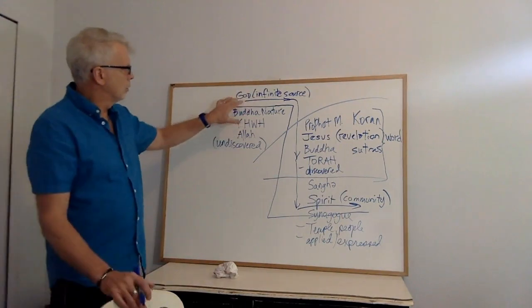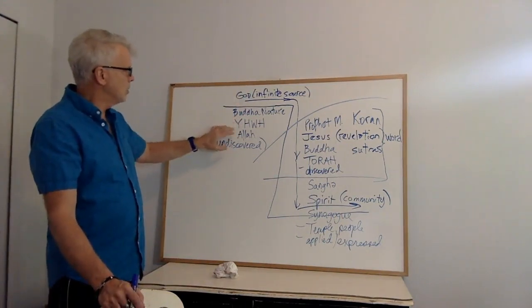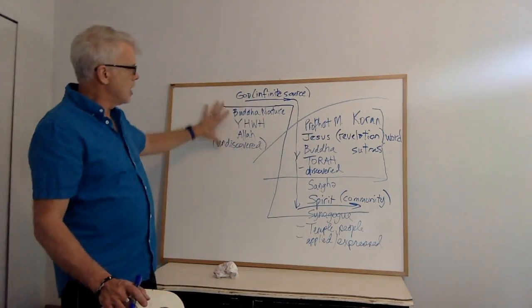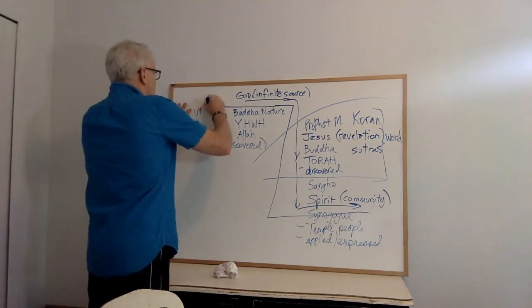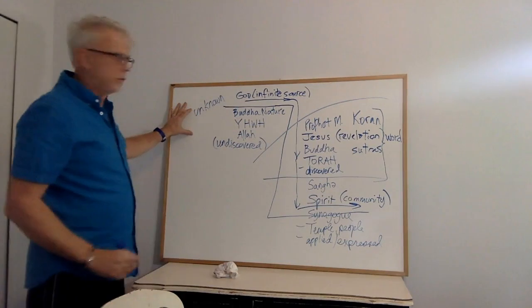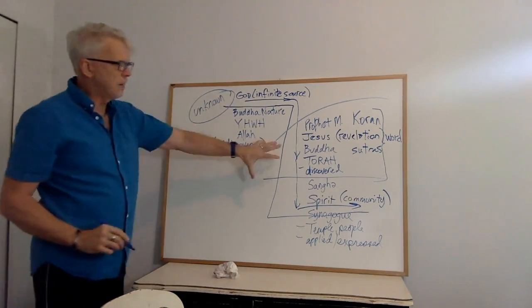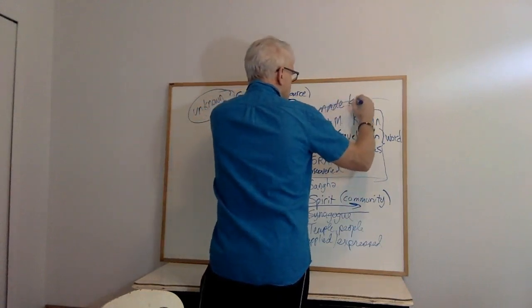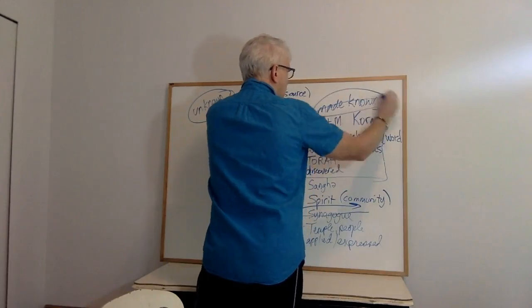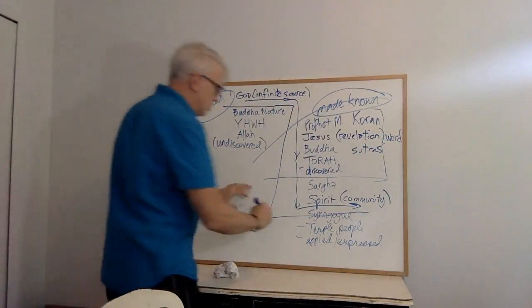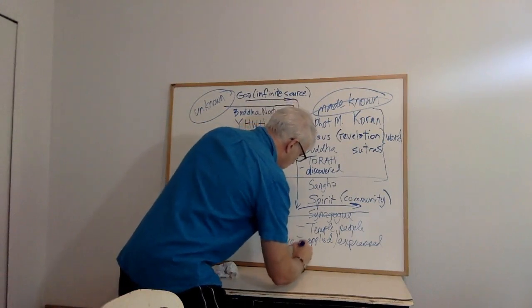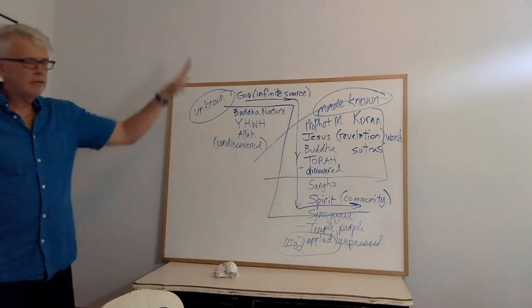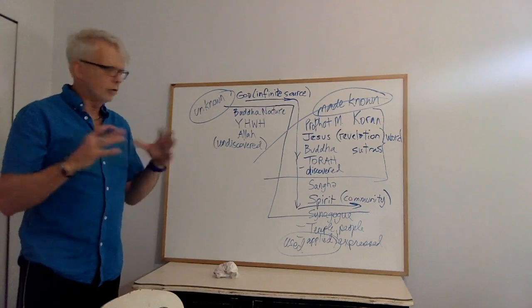So Christians might say the infinite source God, Buddha nature, Yahweh, Allah, the undiscovered. Then the undiscovered or the unknown, unknown is made known. And then it's used or applied. That's basically the structure of reality, the Trinitarian.